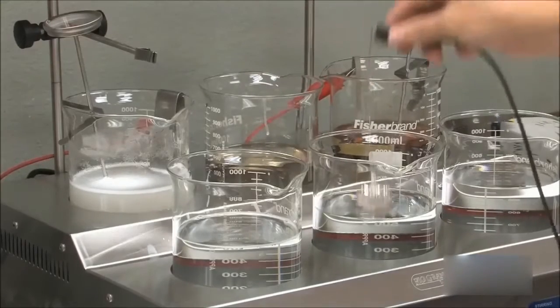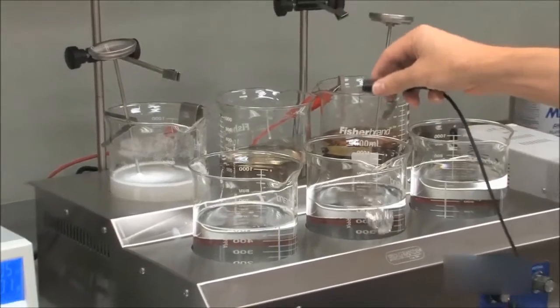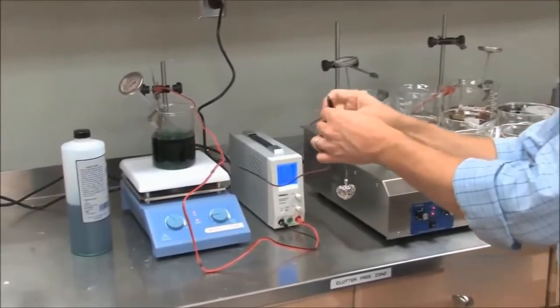After the acid dip, rinse the item again in distilled water. If you are rhodium plating Sterling, you will need to first preplate a barrier layer because both the silver and the copper in Sterling will contaminate the rhodium solution.